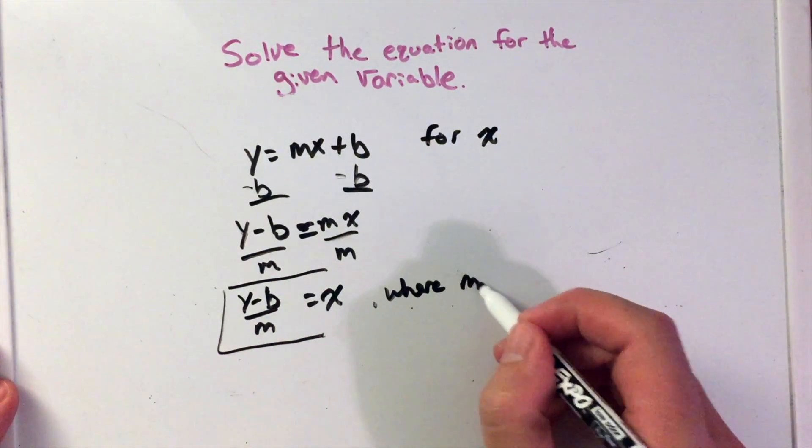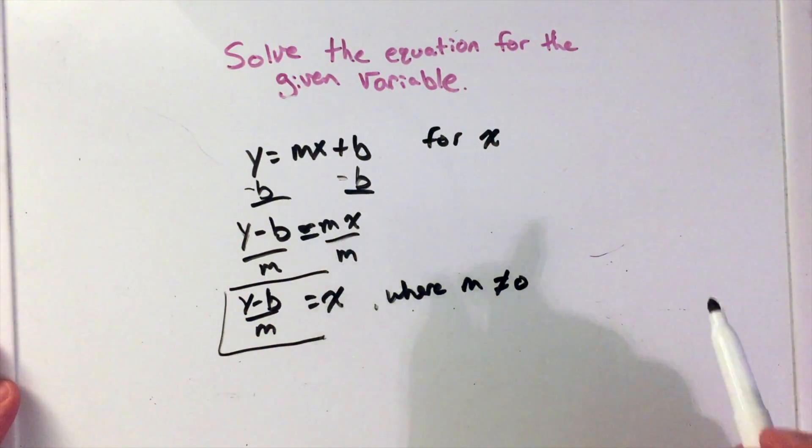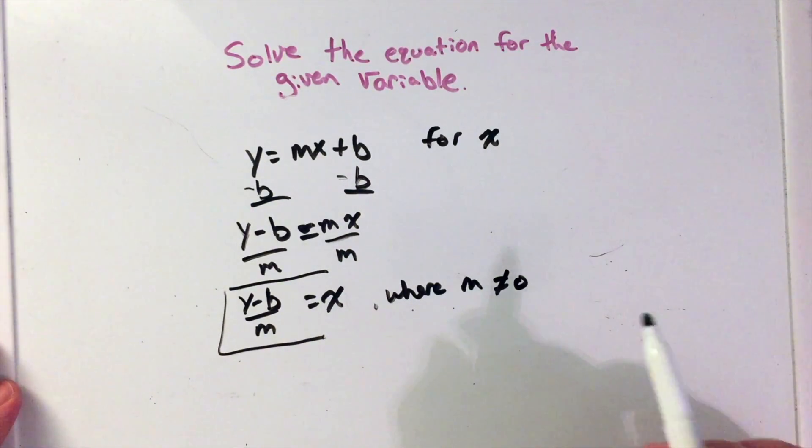Because if m equals zero in this case, then the equation does not exist, so it exists when that doesn't happen.